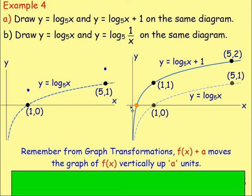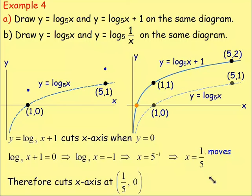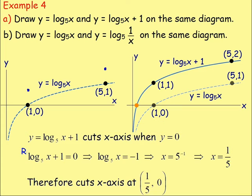You may also be asked where this graph crosses the x-axis. The graph of log base 5 of x plus 1 crosses when y equals 0. So replace y with 0: log base 5 of x plus 1 equals 0. Subtract 1 from both sides: log base 5 of x equals negative 1. Rewrite in exponential form: 5 to the power of negative 1 equals x. That gives x equals one-fifth. Therefore the graph cuts the x-axis at (1/5, 0).